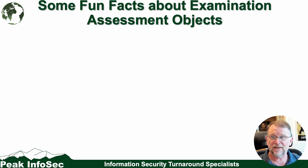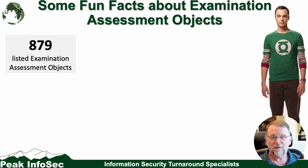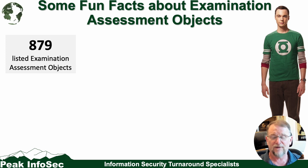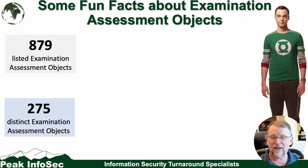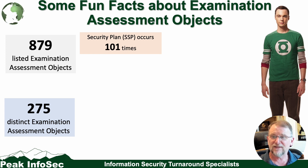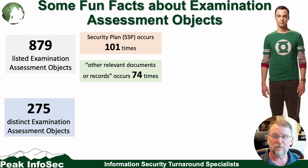Let's take a look at some fun facts about examination assessment objects. Overall, there are 879 examination assessment objects identified in 800-171A. Good news is there are a lot of duplicates, so there are only 275 distinct ones. As we start breaking down what's going on, we see that the system security plan occurs 101 times out of that 879. That's a pretty hefty showing — that's almost one for every requirement.